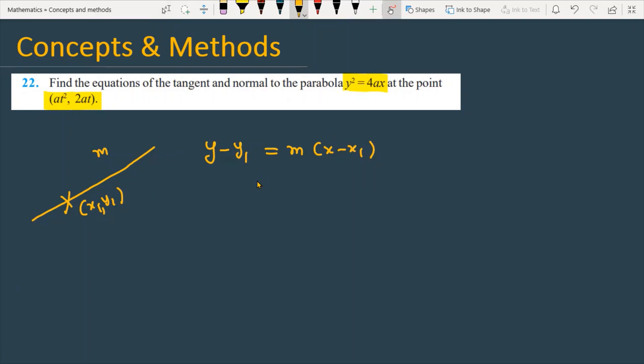Now you have a parabola, and you need the tangent as well as normal equations. Suppose this is a parabola which is y² = 4ax, and this is the point given which is (at², 2at). You need to find the tangent and normal at this point.